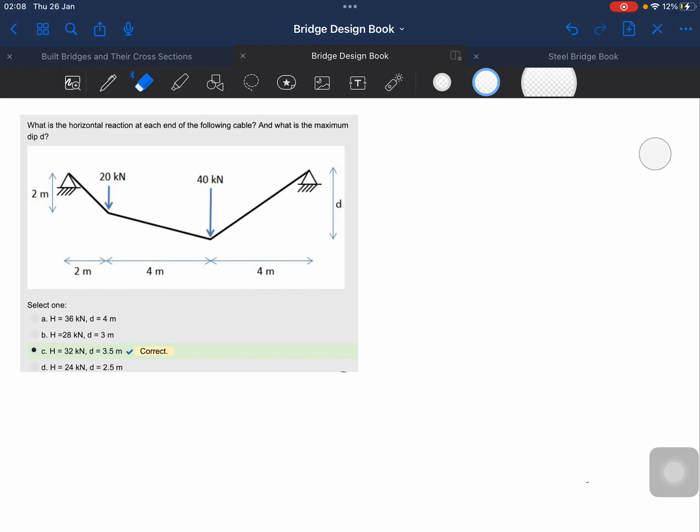Now coming back to the problem, what are the details that have been provided here? We need to calculate the horizontal reaction at each end and what is the maximum depth d. Talking about this pin support, I will name it as A and this is pin support as well, I will name it as B. And let's name these two points as C and D.